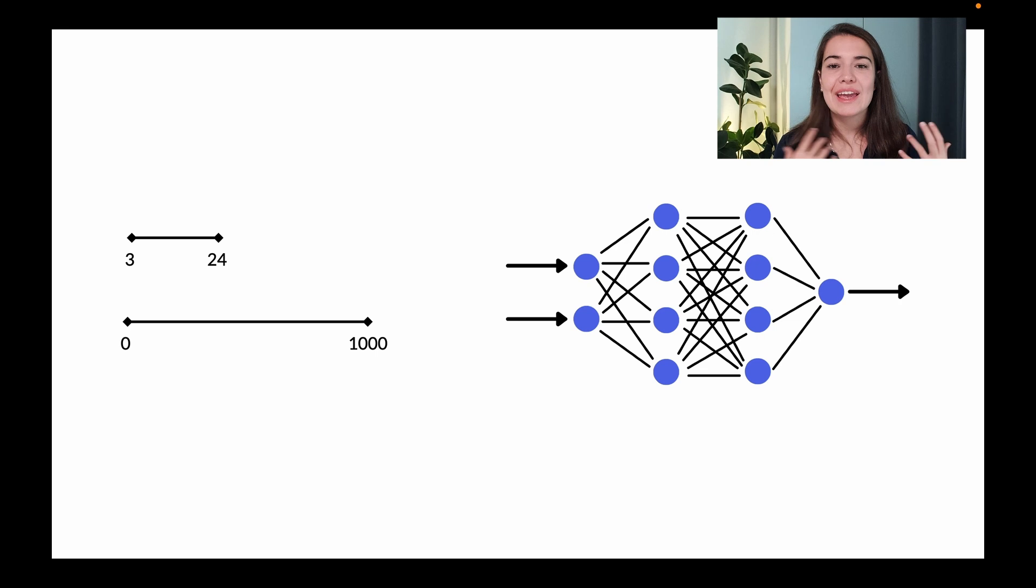So why do we need any sort of normalization for our neural networks to begin with? Let's take this example. Let's say we have a neural network and we want to feed data into it. Our two features are the number of phones that were ever owned by someone and the amount of money they've withdrawn from the ATM today. As you can see, they have very different ranges. One of them goes from two to 24 and the other one goes from zero to a thousand.